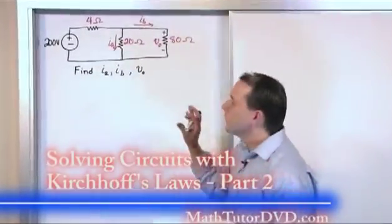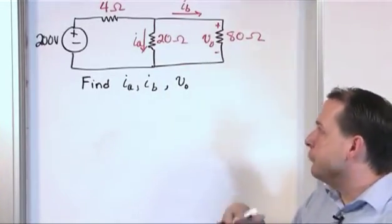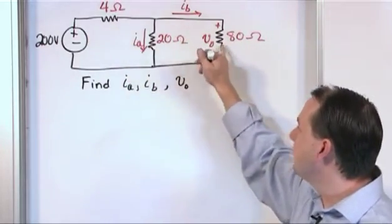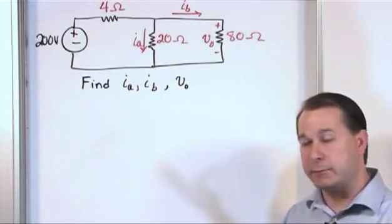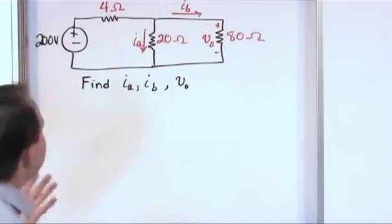So you notice it looks a little bit like the last problem that we did, as far as superficially anyway. We have a voltage source, we have a resistor, resistor, resistor. The form of the circuit looks similar, but this problem is actually harder because